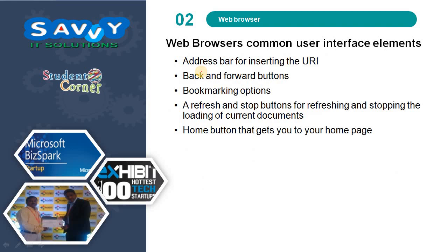Web browser common user interface elements include: an address bar for typing the domain name or URL; back and forward buttons for moving to the previous and next page; a bookmarking option to store pages in the web browser; a refresh and stop button for refreshing and stopping the loading of content; and a home button that gets you to your home page. In modern browsers many more UI elements are added, but these are common across all browsers.